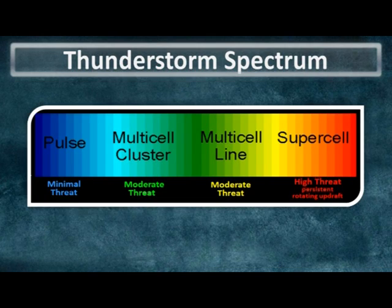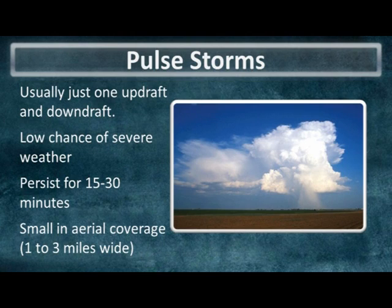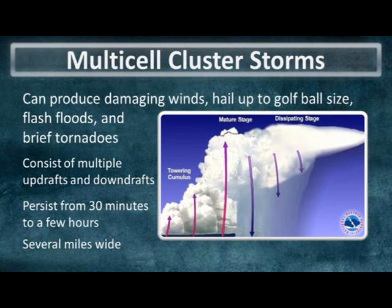In this final section of the training module, we'll talk briefly about the thunderstorm classification scheme. Generally speaking, all thunderstorms can be classified into one of four different categories, ranging from a pulse thunderstorm, which poses the least threat to life and property, all the way up to a supercell thunderstorm, which has the greatest threat for causing destructive weather. Here in the Texas South Plains, pulse storms tend to be most common during the summer months when winds in the atmosphere are very light. These updrafts form and tend to be very upright, but become choked off by precipitation, so pulse storms generally only last about 15 to 30 minutes, producing very minimal severe weather — though a downburst and small hail can occur.